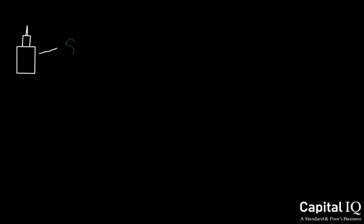What is EBITDA? EBITDA is the unlevered measure of a company's recurring earnings before any financing or accounting decisions have been taken into account. This measure provides a very clean view of how a company is performing.